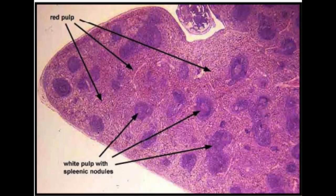You can also talk about red pulp and white pulp in the spleen. The red pulp, drawn in red, is composed of red blood cells. The white pulp, shown as circular regions, contains B cells and is responsible for immune functions.